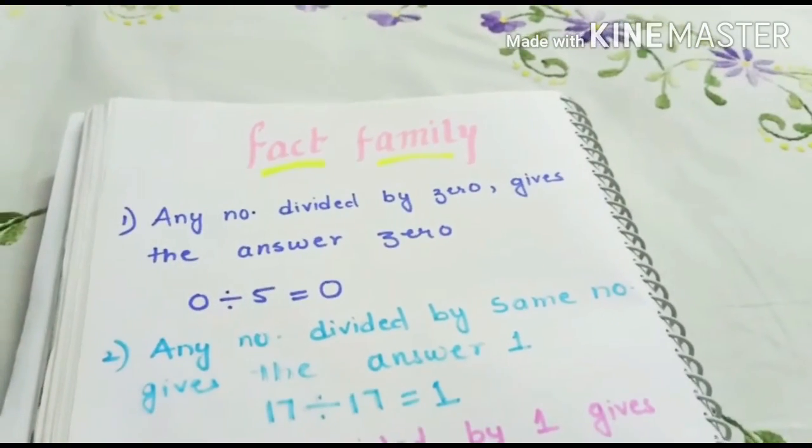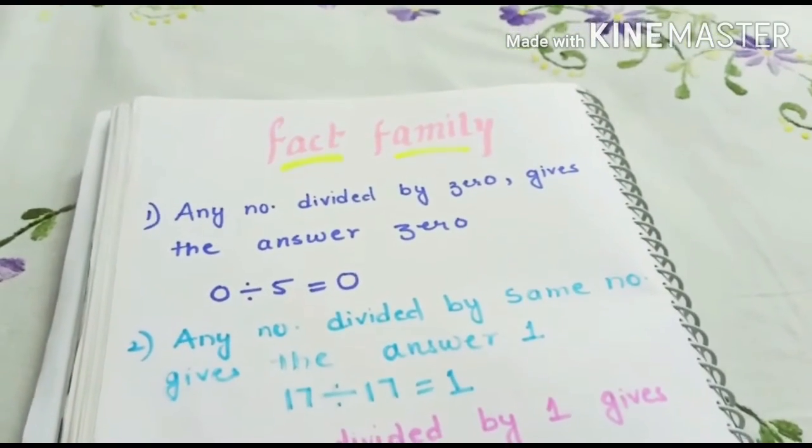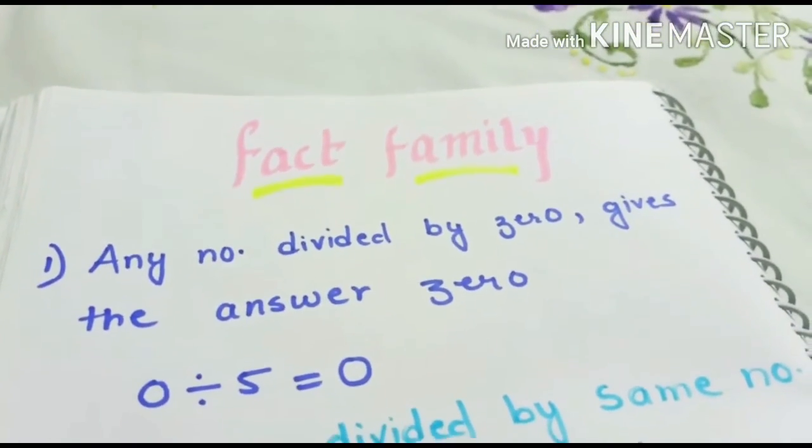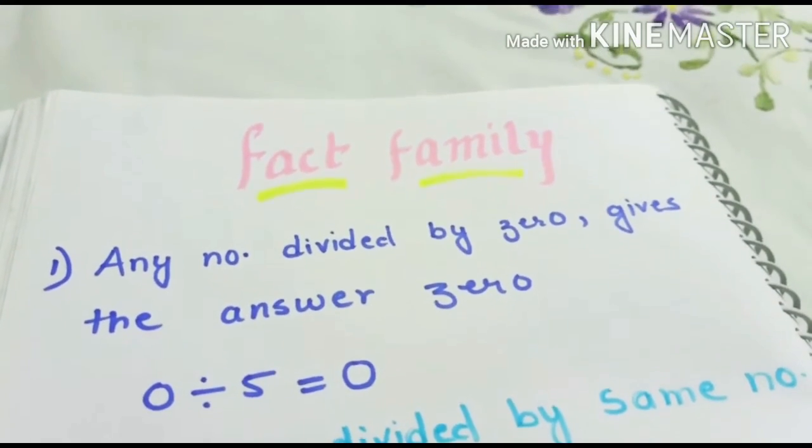Now, let's see the fact family of division. Any number divided by 0 gives us the answer 0. For example, 0 divided by 5 equals to 0.